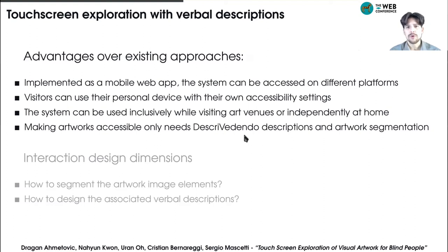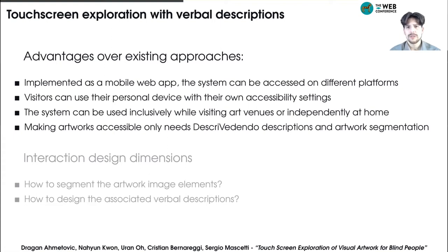The advantages of the proposed approach, with respect to tactile artwork replicas and audio guides or tours, are many. Using a web-based system, accessible on commodity mobile devices, enables widespread and cost-effective distribution. Furthermore, by using their own smartphones and tablets, users can benefit from their own accessibility preferences and settings. The proposed approach can be used at home or within art venues, and it is inclusive to blind and sighted visitors. Finally, to produce accessible artworks, only a description and a segmentation of the artwork is needed.